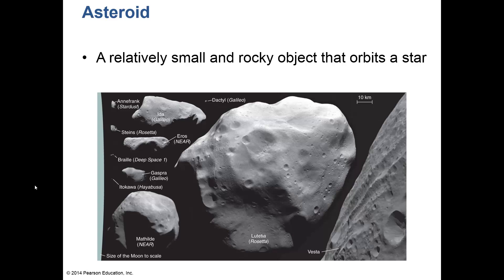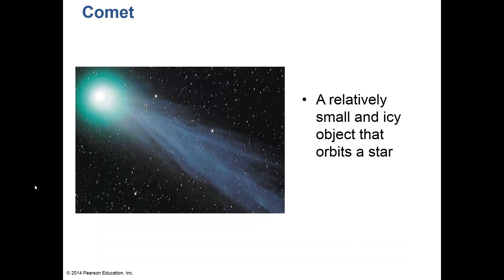One of my favorite topics is comets. Comets are relatively small — the nucleus is only two to twenty miles across — and they are made of dirt, gas, and dust. They orbit stars. Comets can come from two places: from the Kuiper belt, out past Neptune and Pluto, or from many trillions of miles away in what we call the Oort cloud.